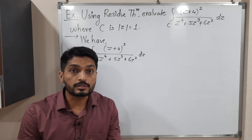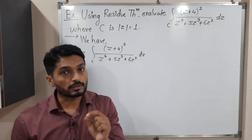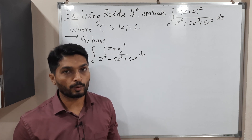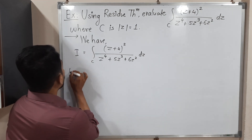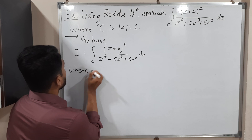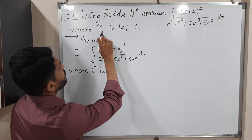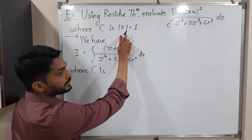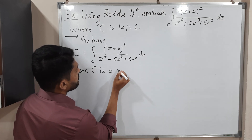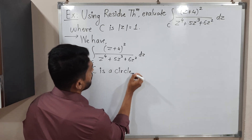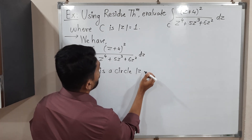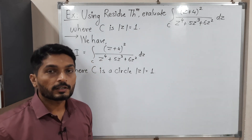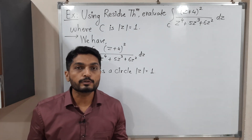The most important thing is the curve C. I will draw the curve C first, then we will solve the remaining part of the problem. C is defined as mod z = 1, which is the equation of a circle.